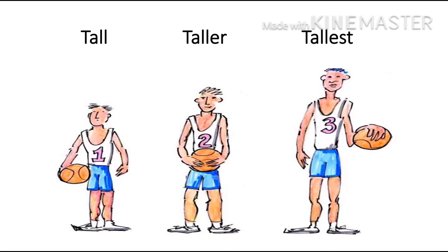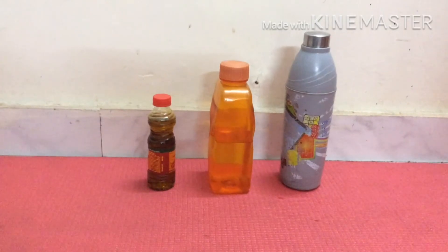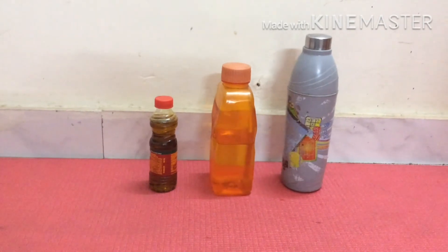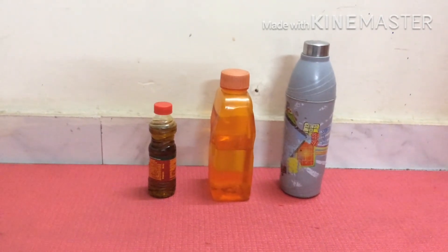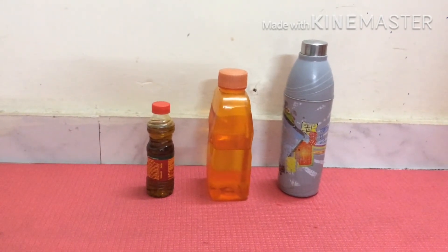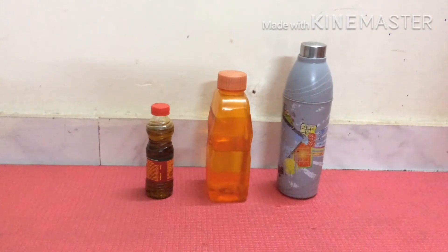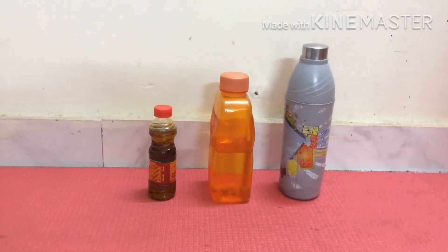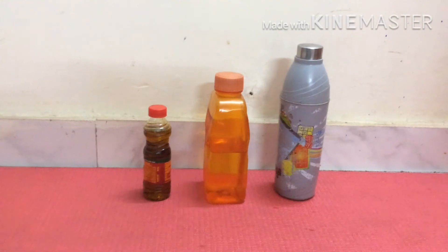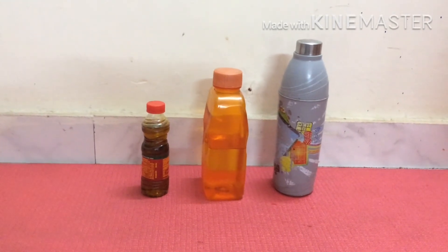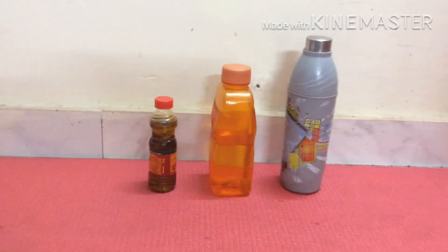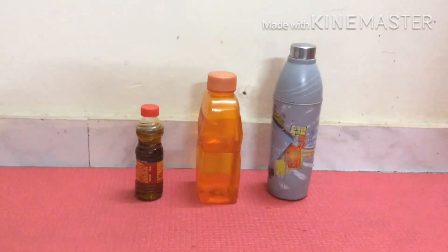Now let's watch a video to understand and get better clarity. As you can see, I have placed three different sized bottles. The bottle on the left, that is the oil bottle, is tall. The orange water bottle in the center is taller, and the grey water bottle is the tallest. So now you can compare the three sizes of tall, taller and tallest.